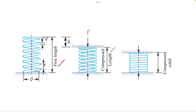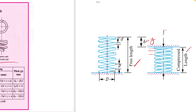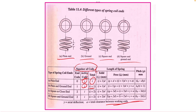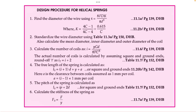Key length terminology: the free length is the length without any applied force. Under the action of force, it reduces to the compressed length, with the difference being the deflection δ. If further force is applied until there is no gap between coils, that length is known as the solid length. Free length, solid length, compressed length, and pitch can all be obtained from the data book table.